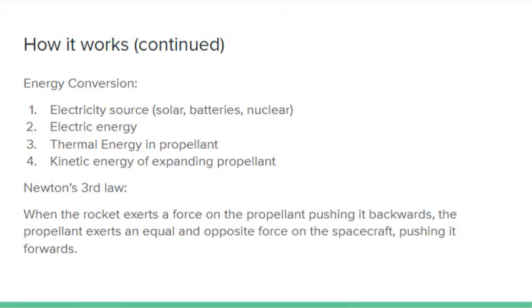The energy conversion begins with the source of the electricity, which can be chemical energy stored in batteries, light energy from the sun, or nuclear energy in a reactor. This energy is then converted into electricity.